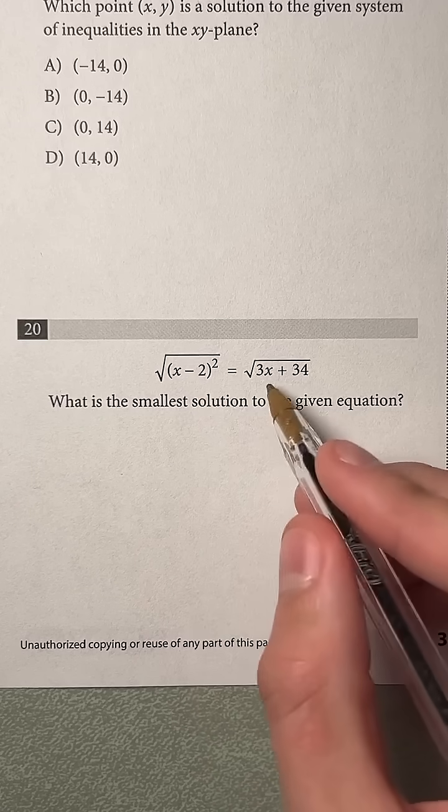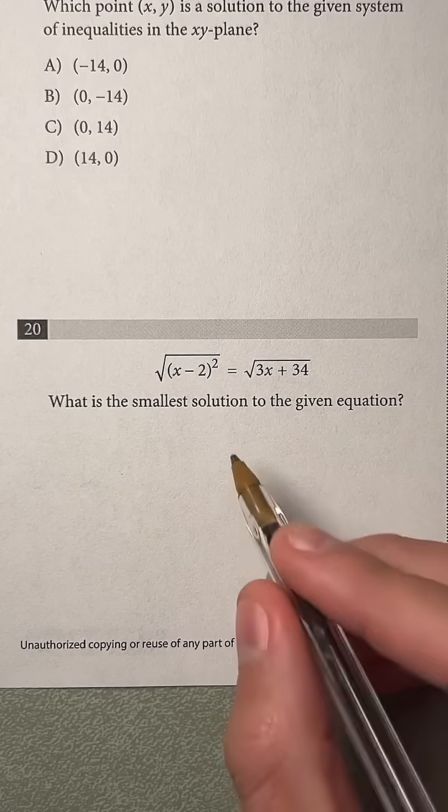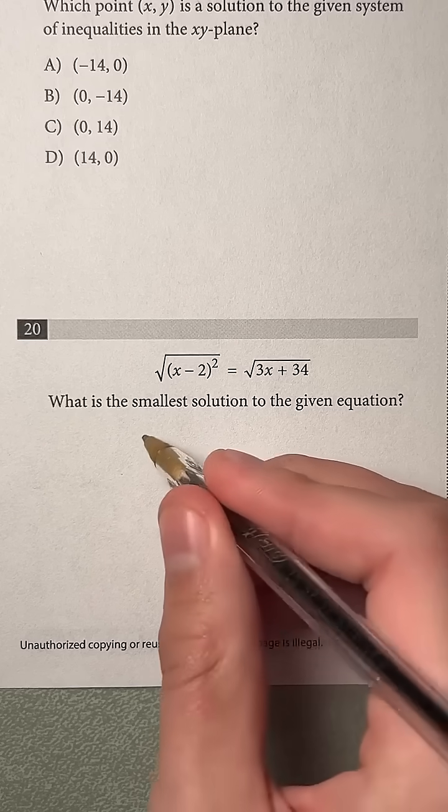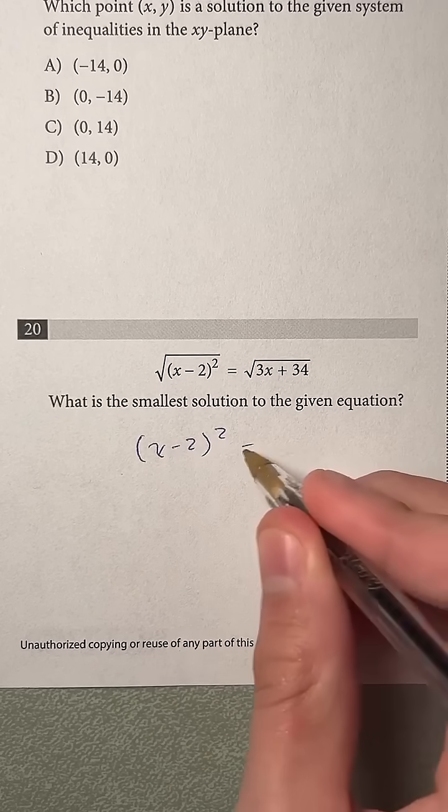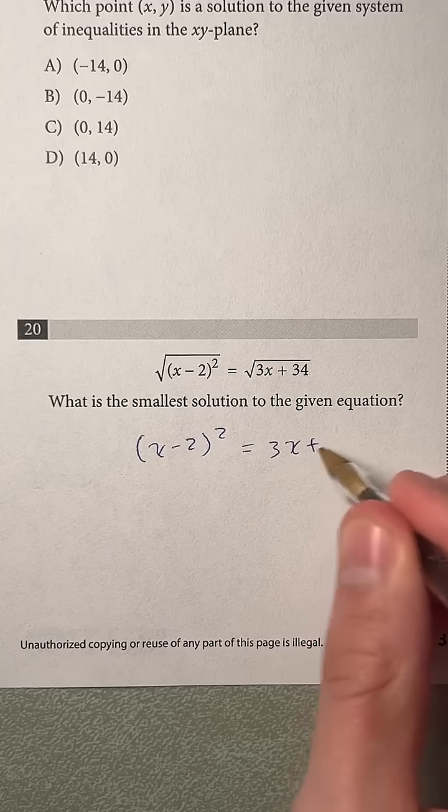The first thing that we can see here is that both of these sides have a square root. So the first step we're going to do is just get rid of both of those, which gives us x minus 2 squared equals 3x plus 34.